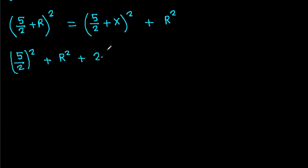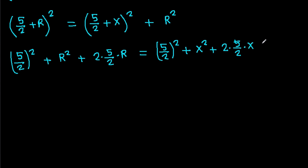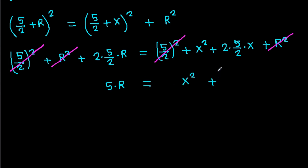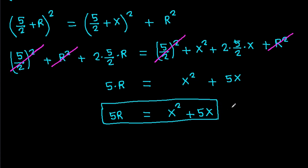Expanding: (5/2 + r)² equals (5/2)² plus x² plus 2 times (5/2) times x plus r². The (5/2)² terms and r² terms cancel, giving 2 times (5/2) times r equals x² plus 2 times (5/2) times x, which simplifies to 5r equals x² plus 5x.